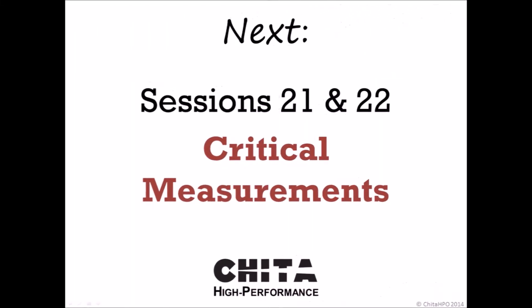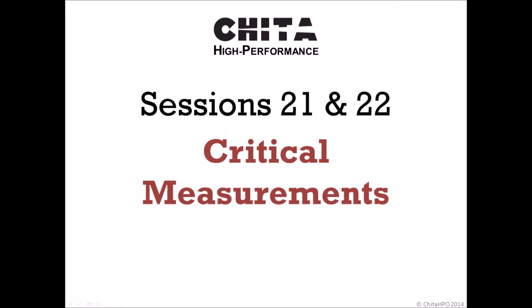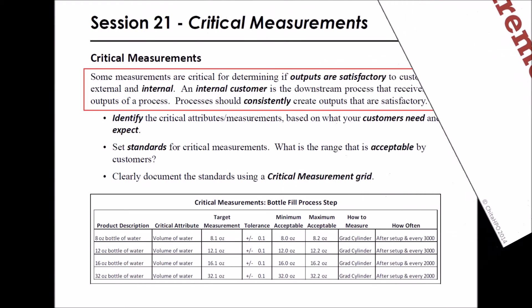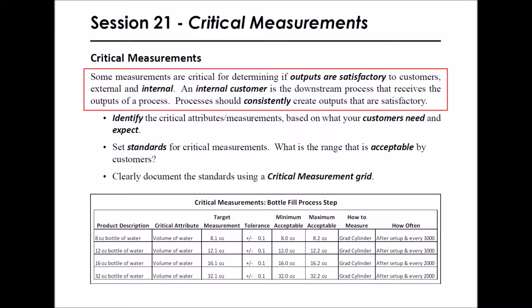In Sessions 21 and 22, we will discuss the role of critical measurements in reducing variability. Some measurements are critical for determining if outputs are satisfactory to customers, both external and internal. An external customer is the end user of the finished product; an internal customer is the downstream process that receives the outputs of an intermediate process.